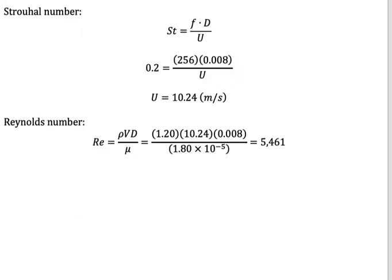If you calculate this, substituting the Strouhal number value of 0.2, you will find that the wind velocity is equal to 10.24 meters per second.